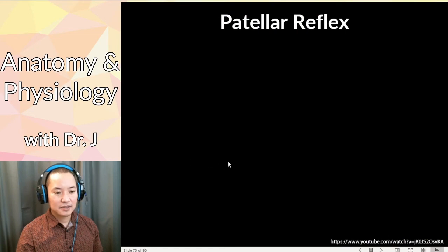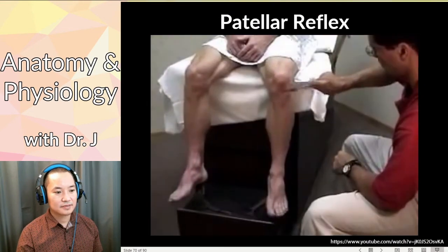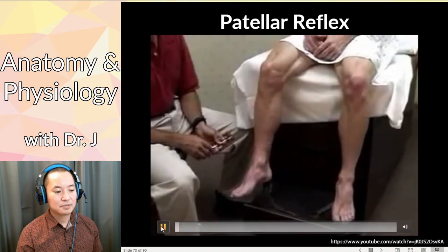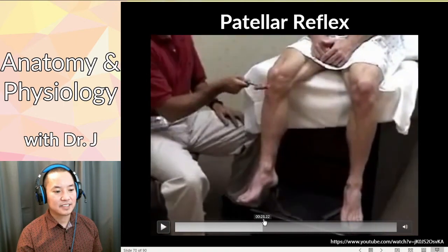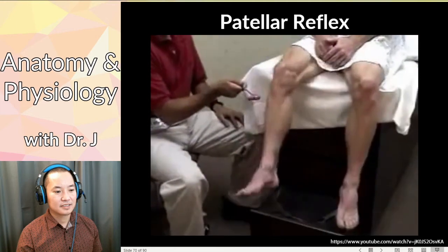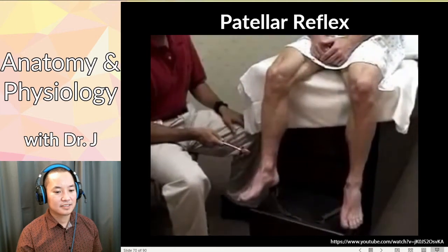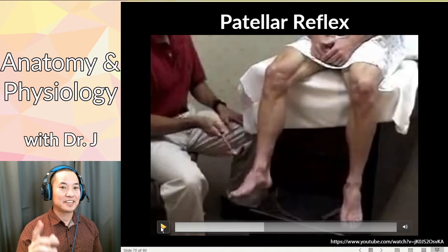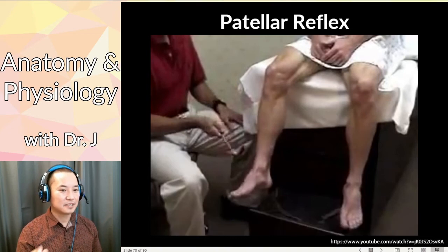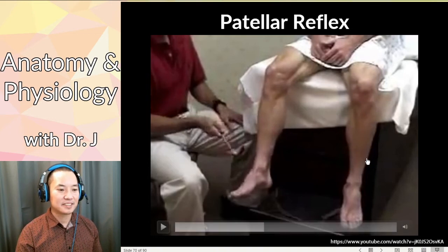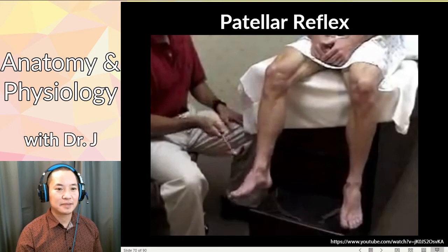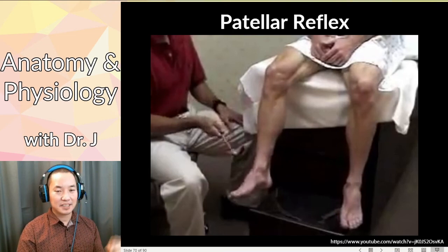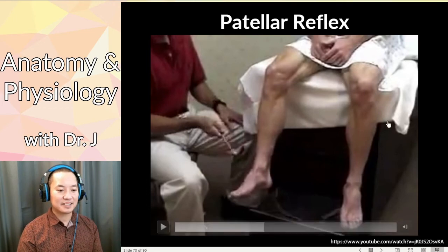Here's what a normal patellar reflex looks like. That was pretty normal. Now let's see a hyperreflexia example. Notice that there's a bigger kick and also a lot of wobbling as well — this is the example of hyperreflexia. This patient had a stroke to the left side of their body, which is why they had hyperreflexia — they had damage to those upper motor neurons, and therefore there's no dampening of that reflex.